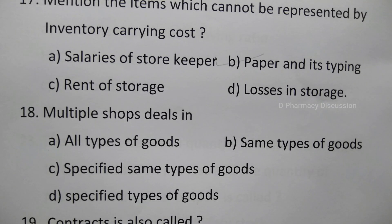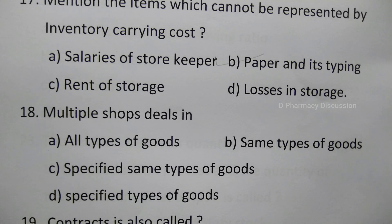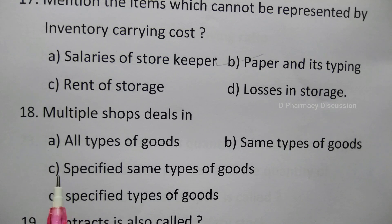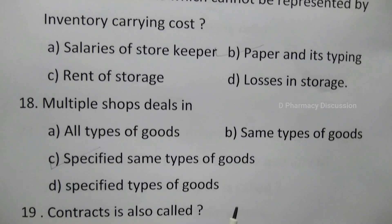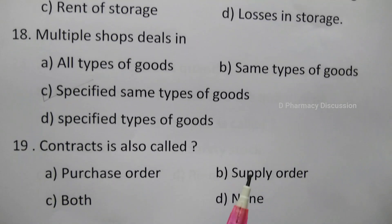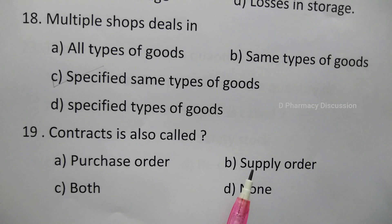Question 18: Multiple shops deal in — option A: all type of goods, B: same type of goods, C: specified same type of goods, D: specified type of goods. The correct answer is option C, specified same type of goods.